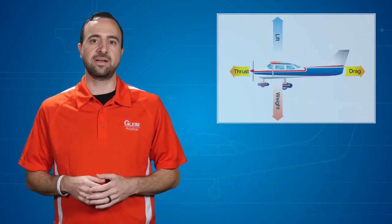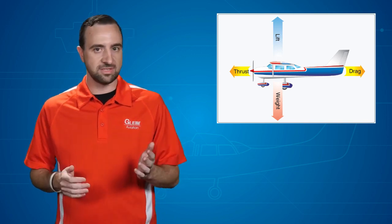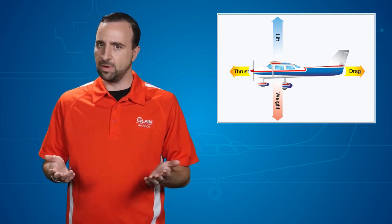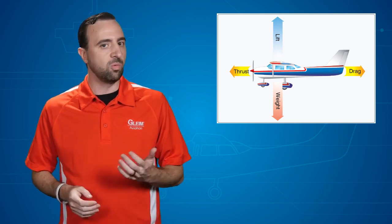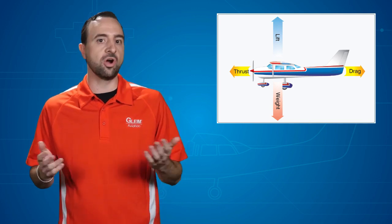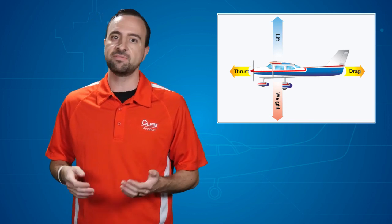Now that we've learned about the parts of the airplane and its instruments, let's learn why and how an airplane can fly through a quick explanation of the forces of flight. There are four forces acting on an aircraft in flight: lift, weight, thrust, and drag. Lift is a force created by the airfoil or wings; in level flight, it is the upward force that opposes weight. Weight consists of the load from the aircraft, crew, fuel, passengers, cargo, and baggage. Weight is a force that pulls the aircraft downward because of gravity.